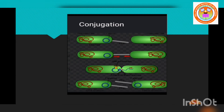The first method is conjugation, demonstrated by J. Lederberg and Edward L. Tatum in Escherichia coli in the year 1946. In this method of gene transfer, the donor cell gets attached to the recipient cell with the help of pili. Two bacteria are required — one is considered the donor and another is considered the recipient — and they get attached with the help of pili.